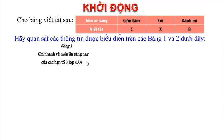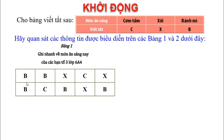Bảng 1: ghi nhanh về món ăn sáng nay của các bạn tổ 3 lớp 6A4. Dựa vào bảng này, các em có được những thông tin gì? Nhìn vào bảng này, các bạn sẽ biết được các món ăn sáng nay của các bạn tổ 3, lần lượt là: bánh mì, bánh mì, xôi, cơm tấm, xôi, bánh mì, cơm tấm, bánh mì, xôi và bánh mì.